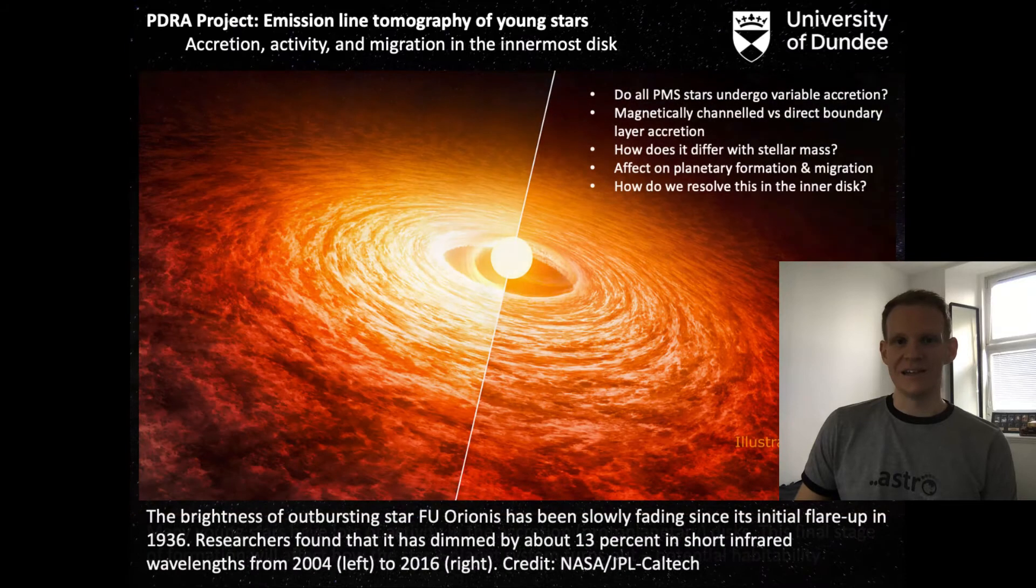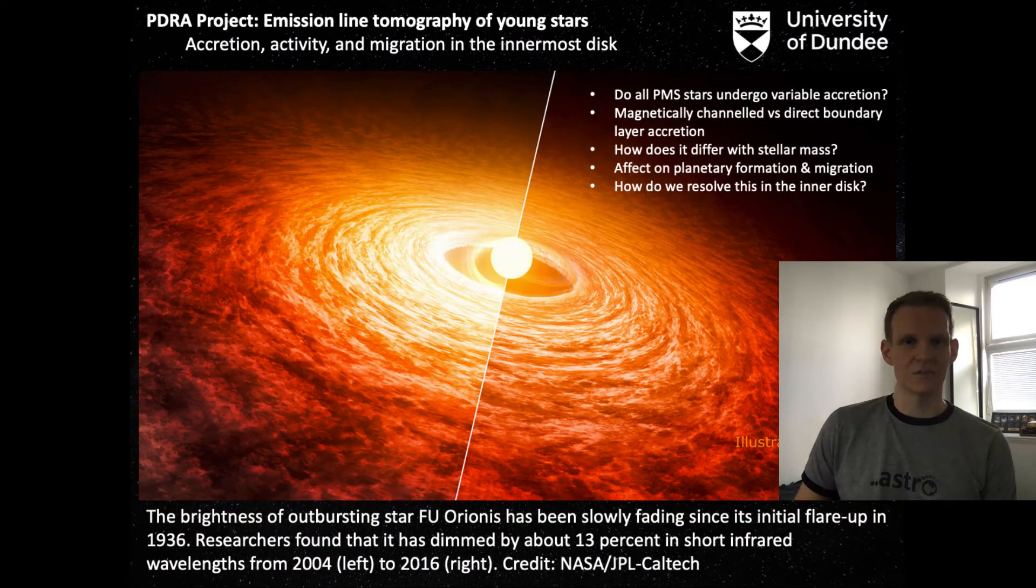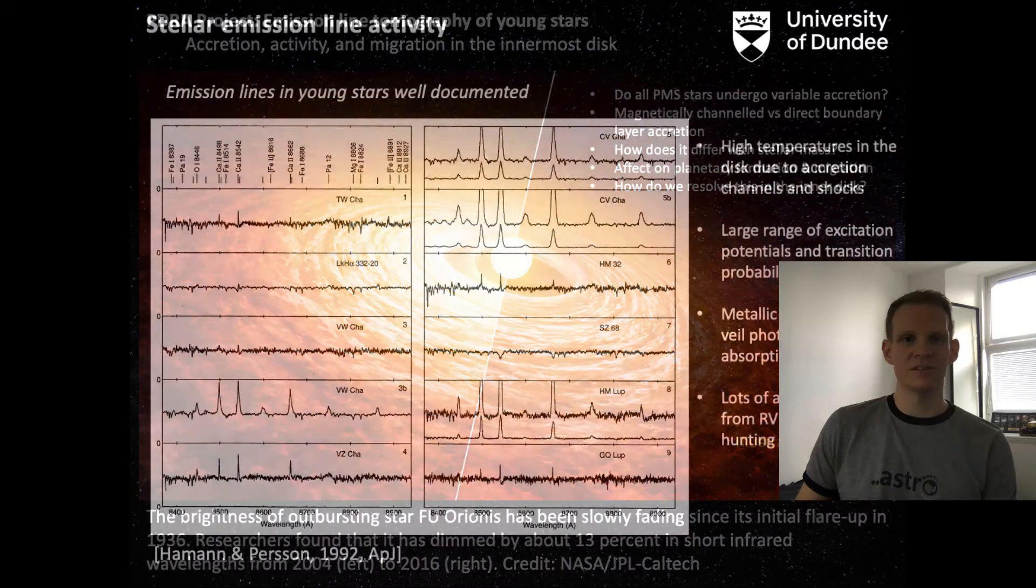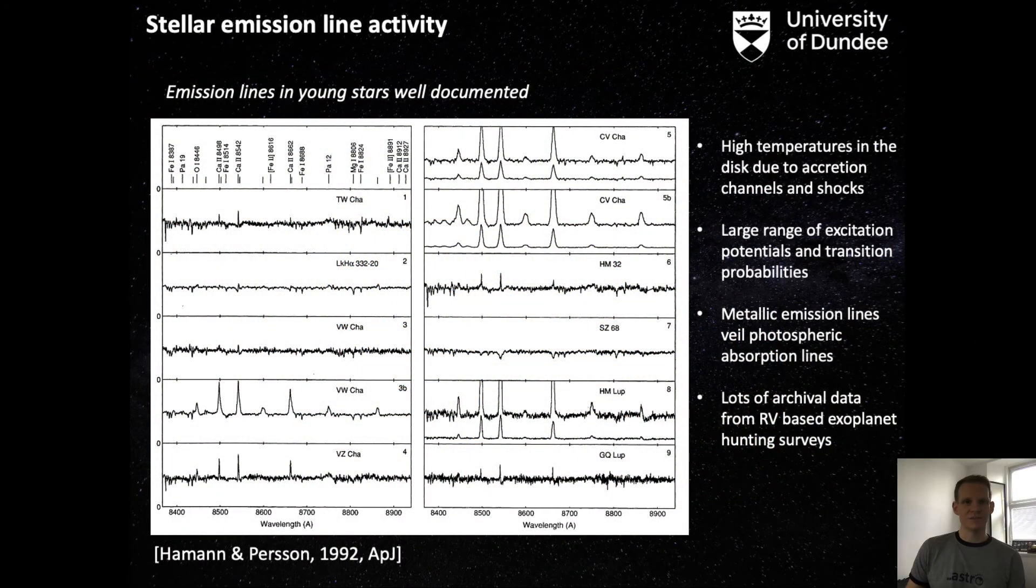We're interested in statistically analyzing accretion across a large sample of stars for different masses and disk types. Using high-resolution spectroscopy, we're able to probe the inner part of the accretion disk. It's well documented that pre-main sequence stars contain a wealth of metallic emission lines. This is due to high temperatures and shocks associated with the accretion columns and boundary layers as the material feeds onto the surface of the star.